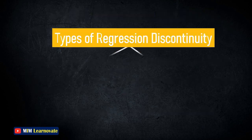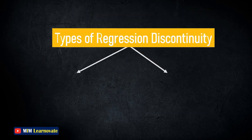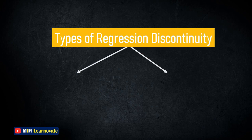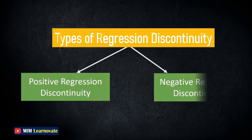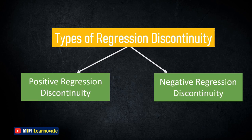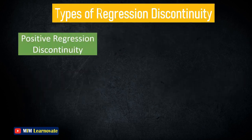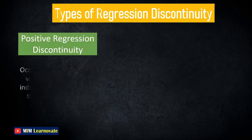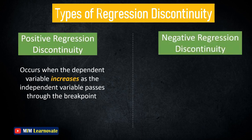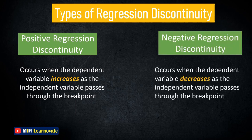There are two types of regression discontinuity: positive regression discontinuity, which occurs when the dependent variable increases as the independent variable passes through the breakpoint, and negative regression discontinuity, which occurs when the dependent variable decreases as the independent variable passes through the breakpoint.